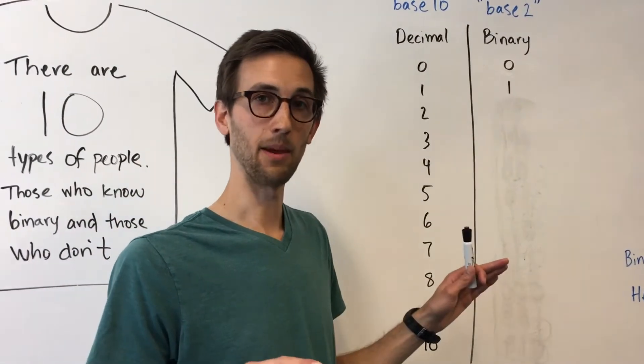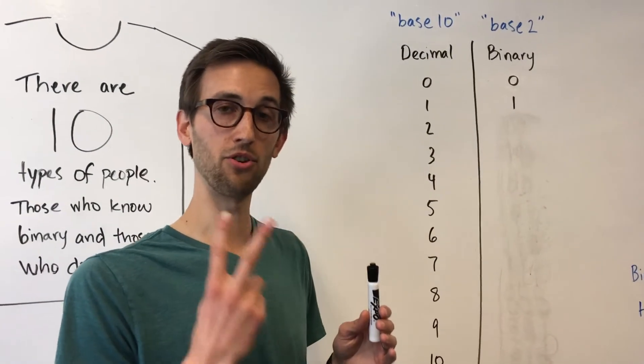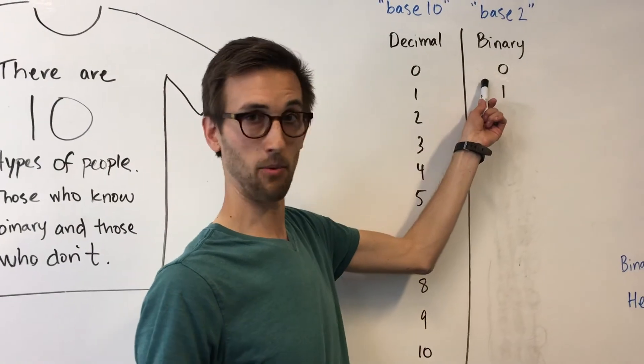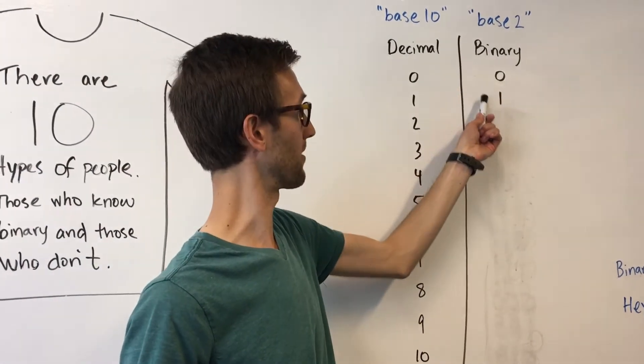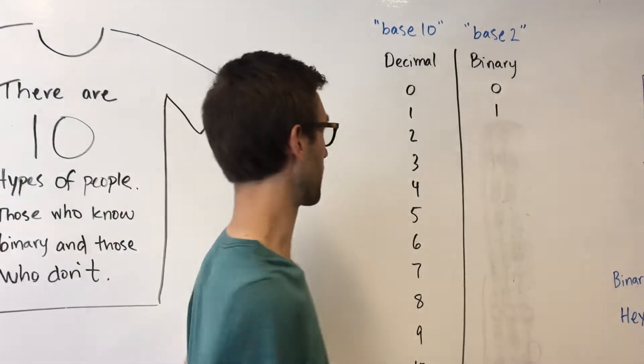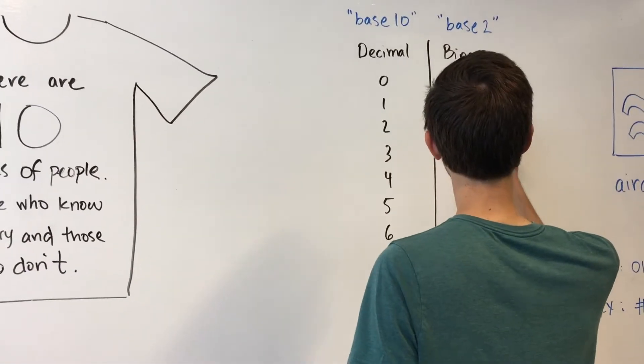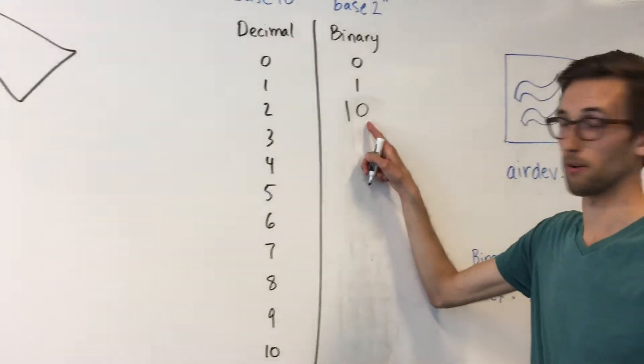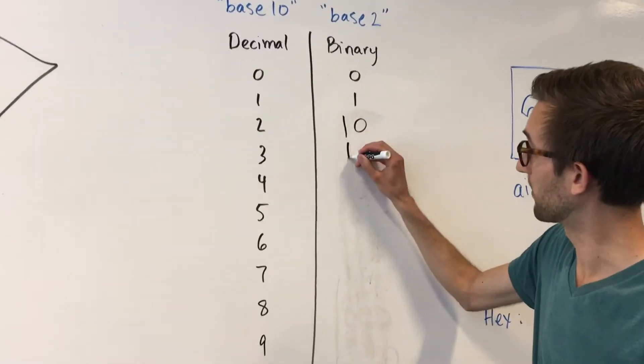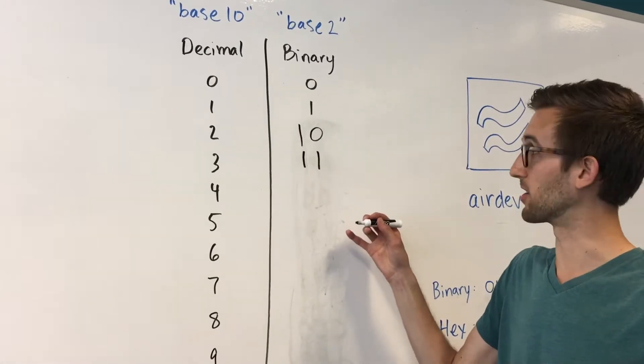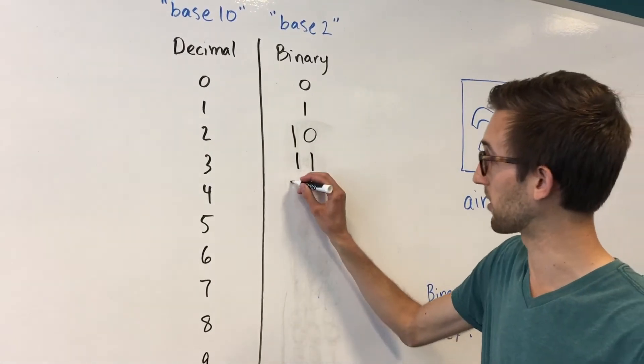Binary works exactly the same way except you're only working with two symbols, the zero and the one. You start the same way as you do with the decimal system. Zero, one. But after that you've already used all of your symbols. So you have to add a digit. You write the number two as a one followed by a zero. Then you're back on track with eleven. And then right away again you've exhausted all the combinations of two different digits. So you have to go to a third.